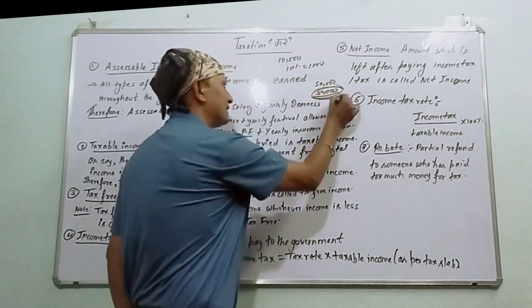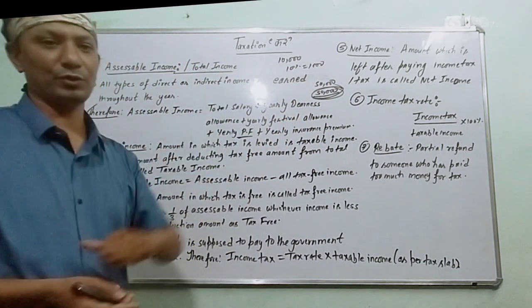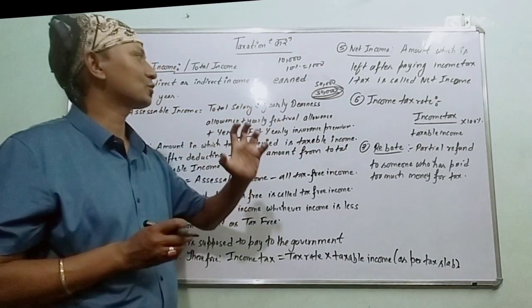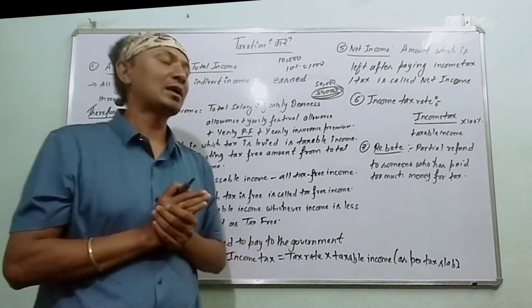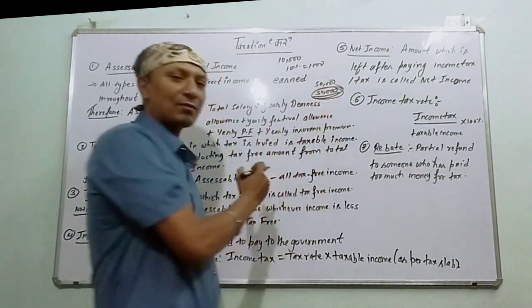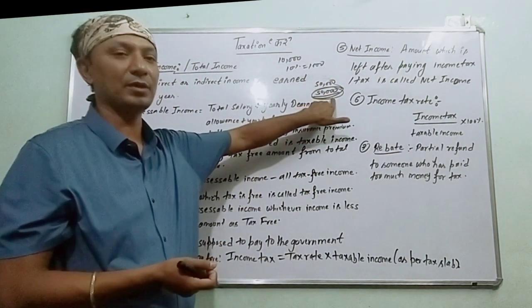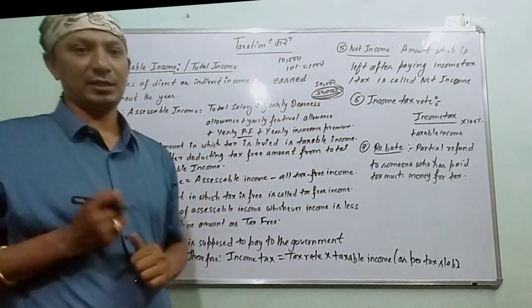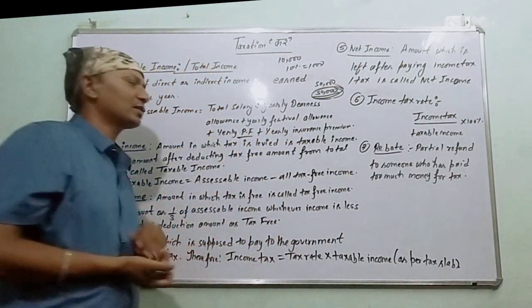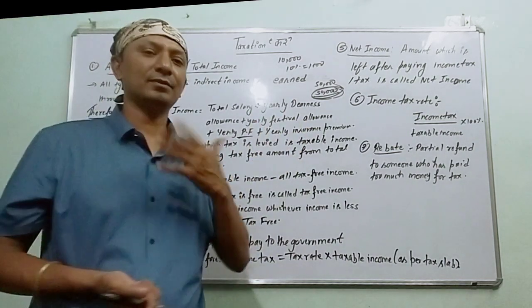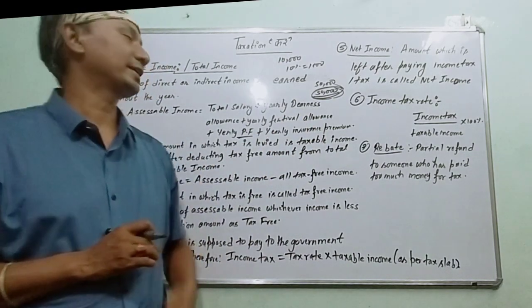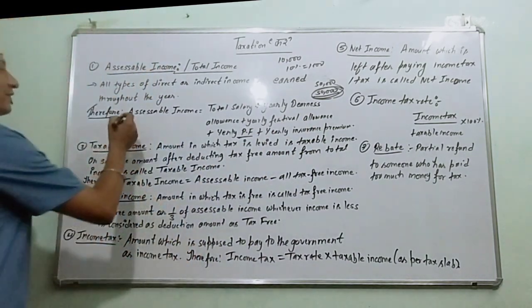And if you get extra from the provident fund, that extra amount becomes indirect income. If you also have a Yearly Insurance Premium, that yearly insurance premium is added in. So you will get access to your full income — your accessible income.